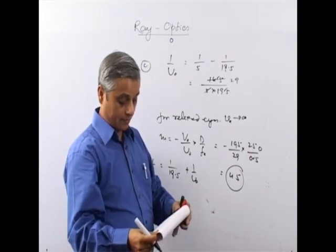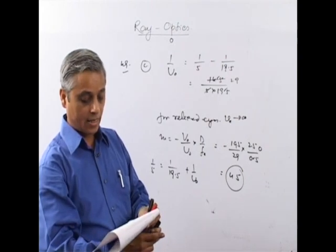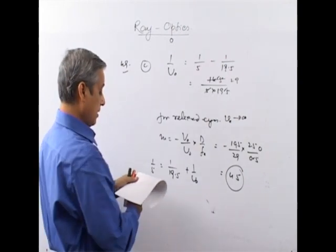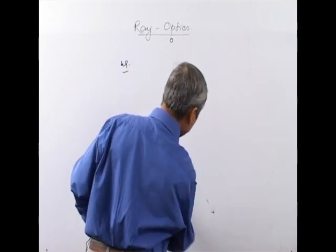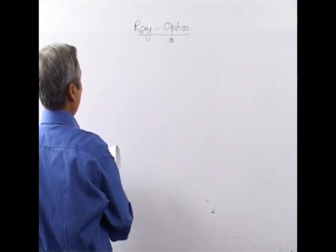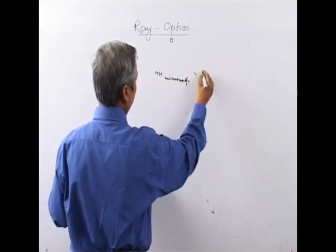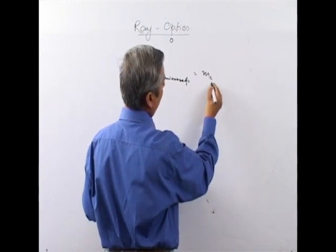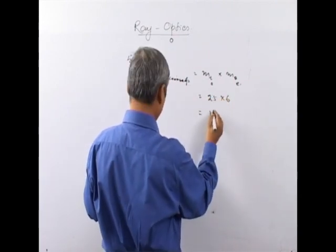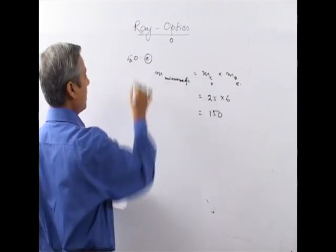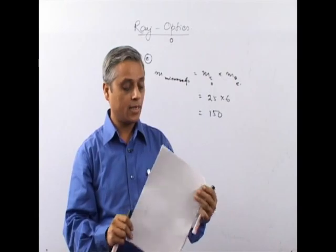Question number 50: The magnification produced by the objective lens and eye lens of a compound microscope are 25 and 6 respectively. Total magnification = M_objective × M_eyepiece = 25 × 6 = 150. The answer is C: 150. Try out these questions again to build up your concepts.